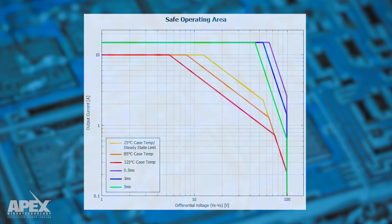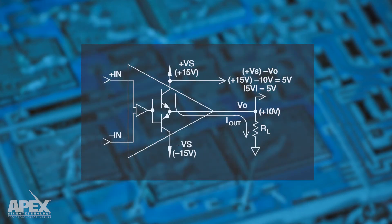Vs minus V0 is the difference between the supply voltage and the output voltage across that conducting device, like a transistor or a MOSFET, at the output of the amplifier.